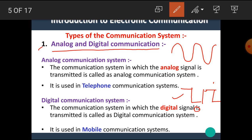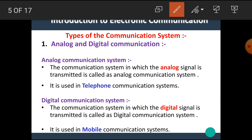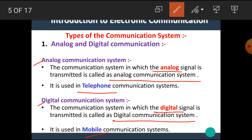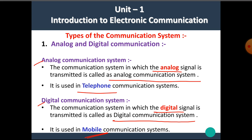The square wave has only two values, 0 and 1. Hence, the square wave is the example of a digital signal while the sine wave is the example of an analog signal. The communication system in which the analog signal is transmitted is called the analog communication system. It is used in telephone communication. The communication system in which a digital signal is transmitted is called the digital communication system. It is used in mobile communication.